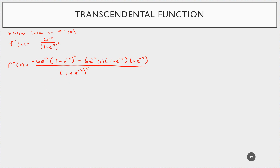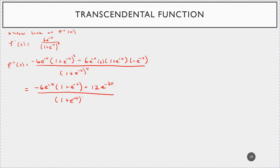Notice each term has a factor of (1 + e^(-x)), so factor that out and cancel with the denominator. After factoring: numerator becomes -6e^(-x)(1 + e^(-x)) plus 12e^(-2x) — since e^(-x) · e^(-x) = e^(-2x) — all over (1 + e^(-x))^3.